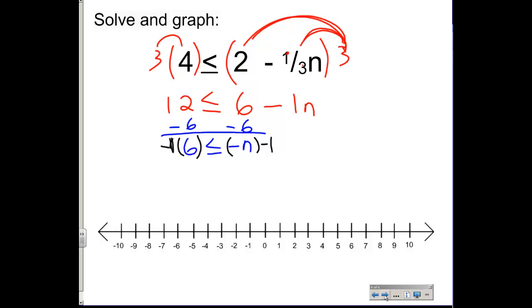But keep in mind, anytime you multiply by negative 1 on both sides, even though this becomes a positive n, the inequality will change directions like that, and I'll have a negative 6 on the other side.